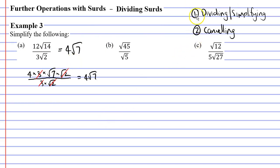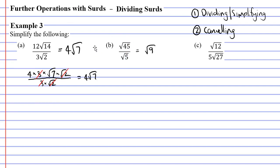The method you use will depend on the type of question. Moving on to question B: 45 divided by 5 is 9, so root 45 divided by root 5 is the square root of 9, which equals 3. The dividing method works best here too, so I won't bother with the cancelling method.